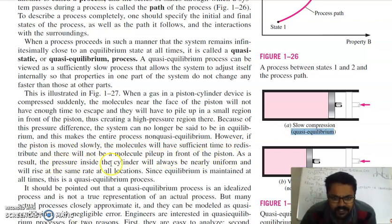Because of this pressure difference, the system can no longer be said to be in equilibrium, and this makes the entire process non-quasi-equilibrium. However, if the piston moves slowly, the molecules will have sufficient time to redistribute, and there will not be a molecule pile-up in front of the piston. The pressure inside the cylinder will always be nearly uniform and will rise at the same rate at all locations. Since equilibrium is maintained at all times, this is called a quasi-equilibrium process.